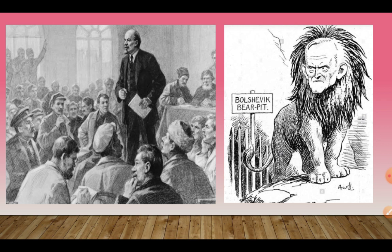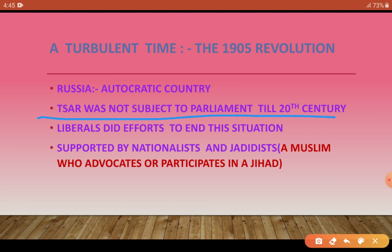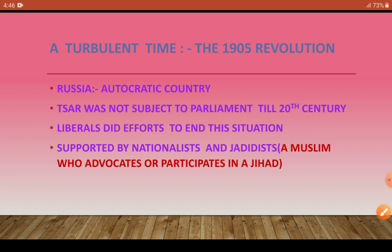Now comes a critical time — the 1905 Revolution. Russia was an autocracy and the Tsar was not part of parliament until 1920, but liberals were constantly making efforts to change this situation. Liberals were being helped by nationalists and Jadists in ending this situation. They wanted the Tsar to be part of parliament, as he had absolute powers that needed to be controlled by parliament.